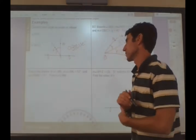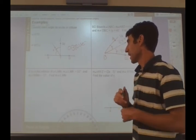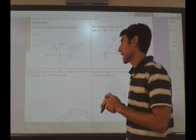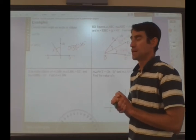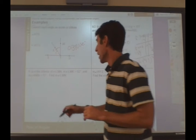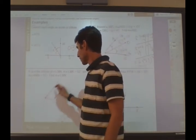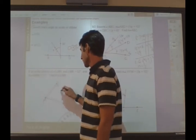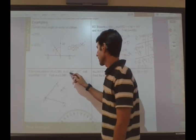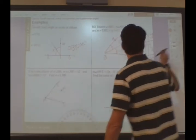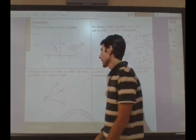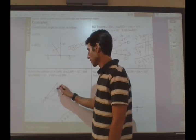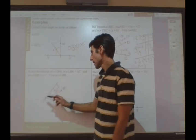K is in the interior of angle LMN. Measurement of angle LMK is 52 degrees, and the measure of angle KMN is 12 degrees. Find the measure of LMN. I think I need a drawing. All right. So we have angle L, M, N. And we have a point K, which is inside, which I'll just put here. The measurement of angle LMK. So I'm going to put a new line segment connecting L and K. All right. So the measure of LMK is 52 degrees. And KMN is 12 degrees. What is LMN?